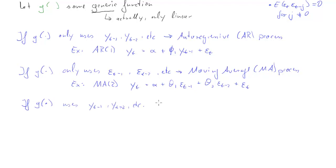If that function g uses both lags of yt and lags of epsilon t, then we call the resulting process an ARMA process, an autoregressive moving average process. And let me state an example.